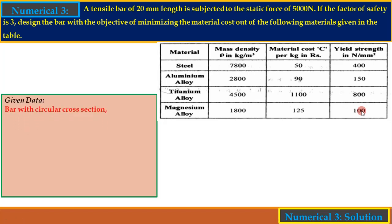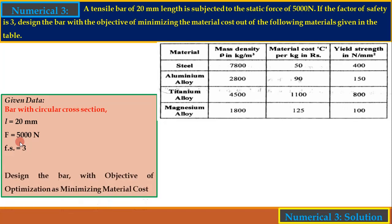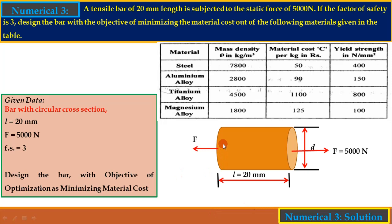The bar has a circular cross section with a length of 20 mm. The force on this bar is tensile in nature with a magnitude of 5000 N. The factor of safety is 3, and we have to find out the diameter with the objective of minimizing the material cost.